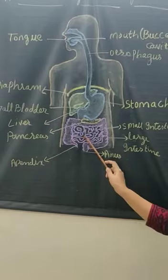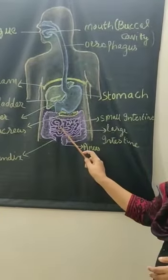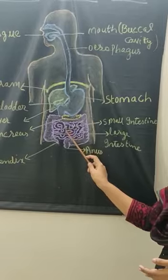Pancreatic juice produces trypsin, and lipase helps in the digestion of fat.